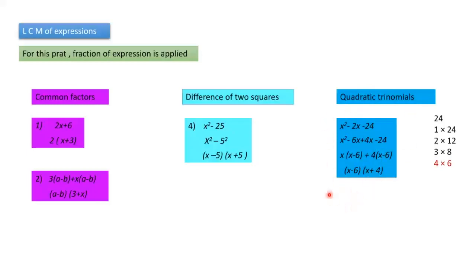This part is another lesson — if you don't know it, you have to go through that lesson. For x² − 6x + 4x − 24: x is common in the first pair giving x(x − 6), and 4 is common in the second pair giving 4(x − 6). So the two factors are (x − 6)(x + 4).